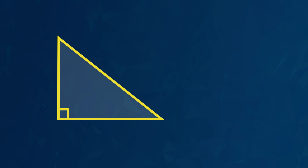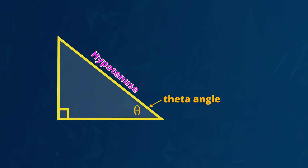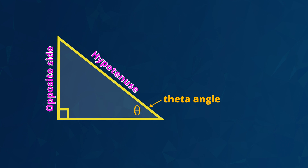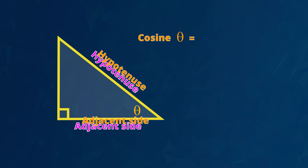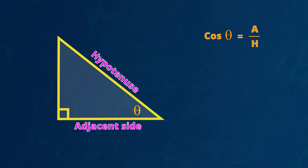Now let's see the cosine rule. In this right angle triangle, here is the right angle. Opposite the right angle is the longest side called the hypotenuse. This angle here is marked with the Greek letter called theta. Opposite the theta angle is the side called the opposite side. Next to the theta angle is a side called the adjacent side. The rule is that the cosine of an angle marked theta equals the length of the adjacent side divided by the length of the hypotenuse. We usually shorten that to: cos theta equals a divided by h.